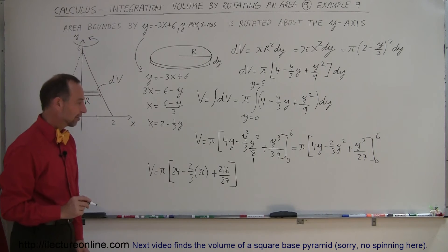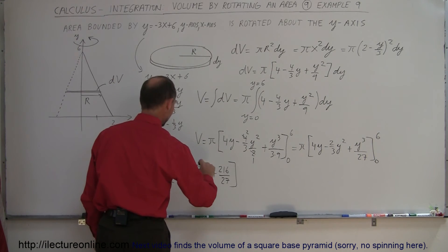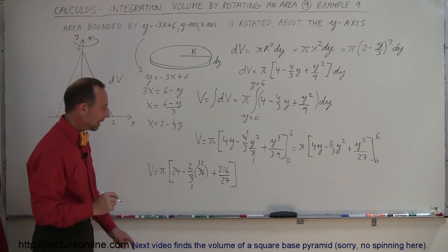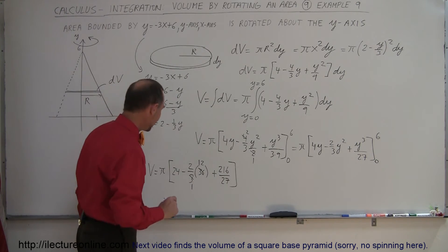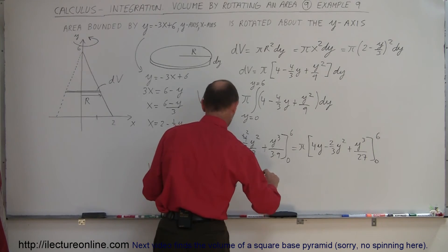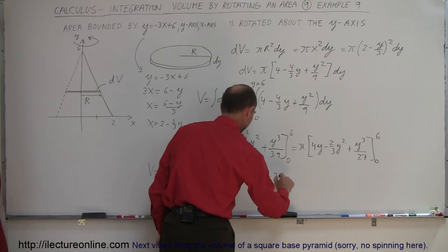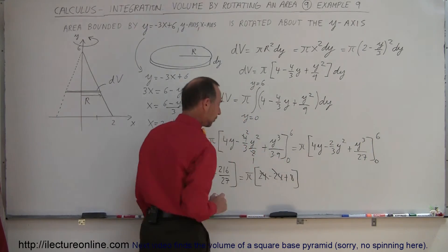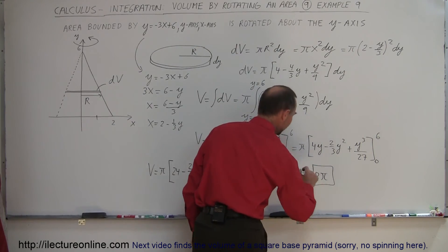Simplifying that, 3 goes into 36, 12 times, and 27 goes into 216, 8 times. So this is equal to π times 24, minus 24, and plus 8. Of course, 24 minus 24 cancels out, and finally we get the result of 8π as being the volume.